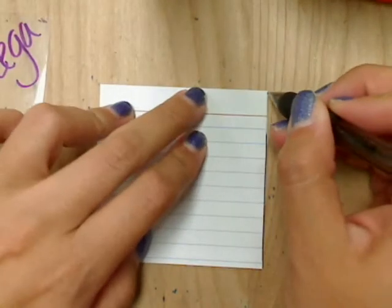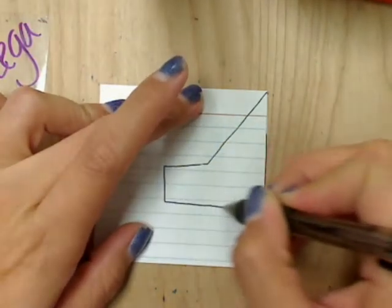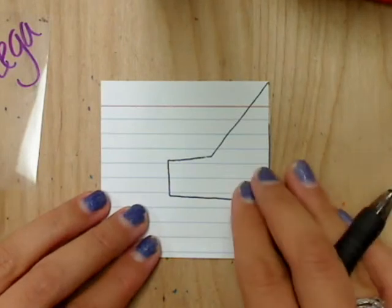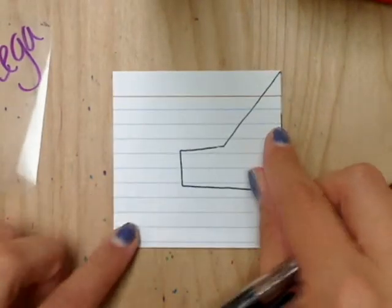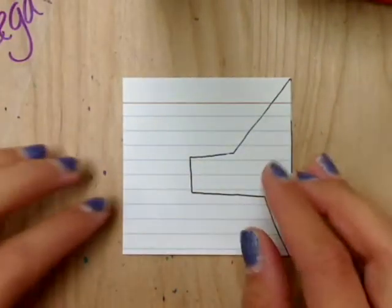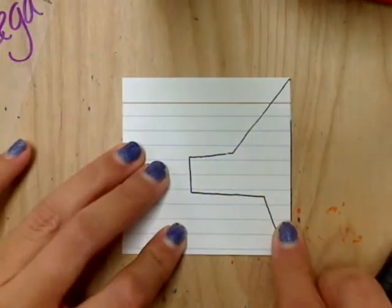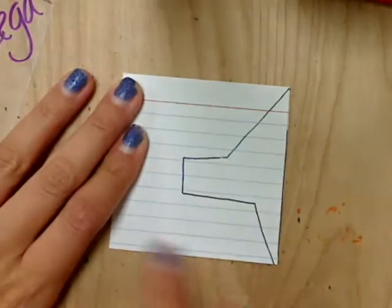So the first option is that you can make one single design like so. And what you're going to do is you're going to cut along this line and then this piece gets taped to the opposite side. Now the other option to make it a little bit more challenging for yourself is you can do a design here and then a design on one of these other sides. So it's got to be on the top or on the bottom.